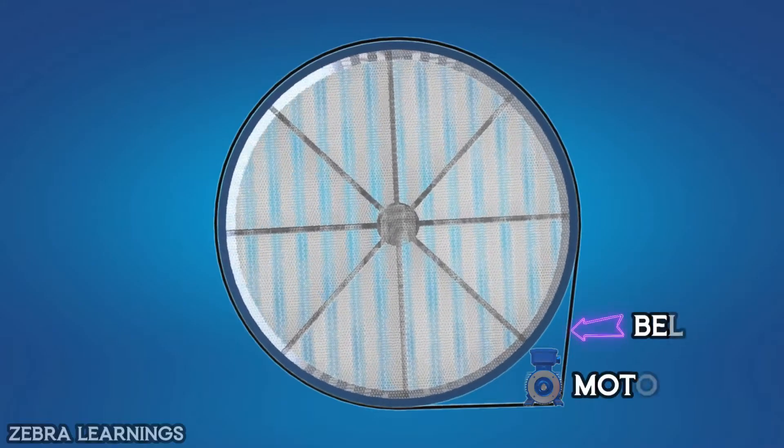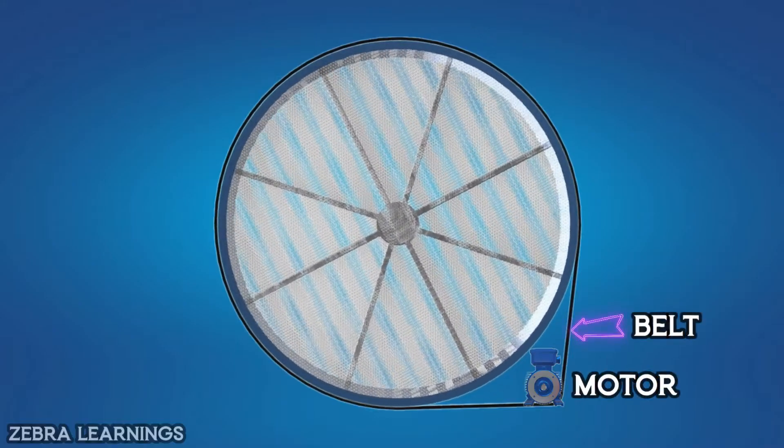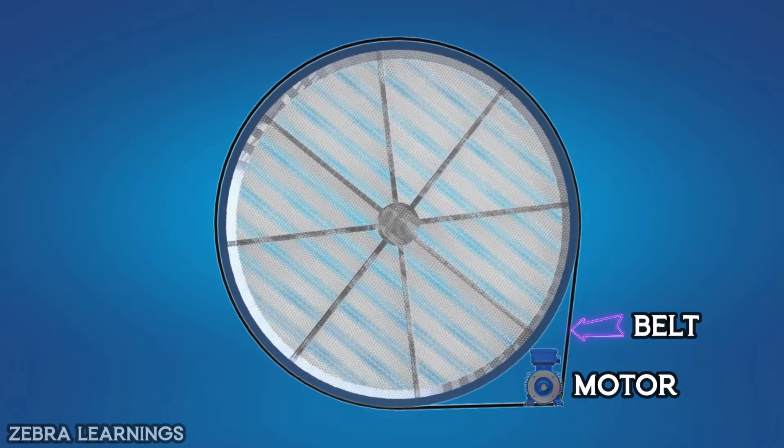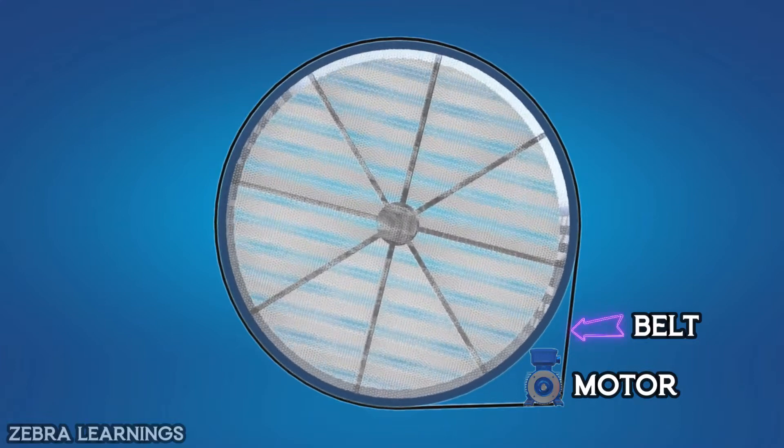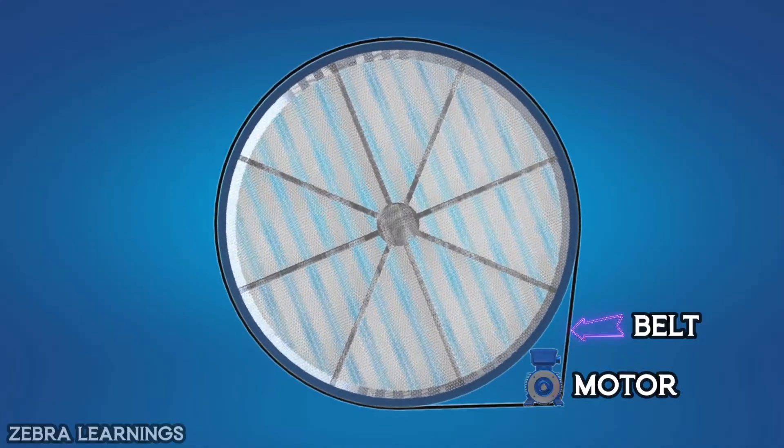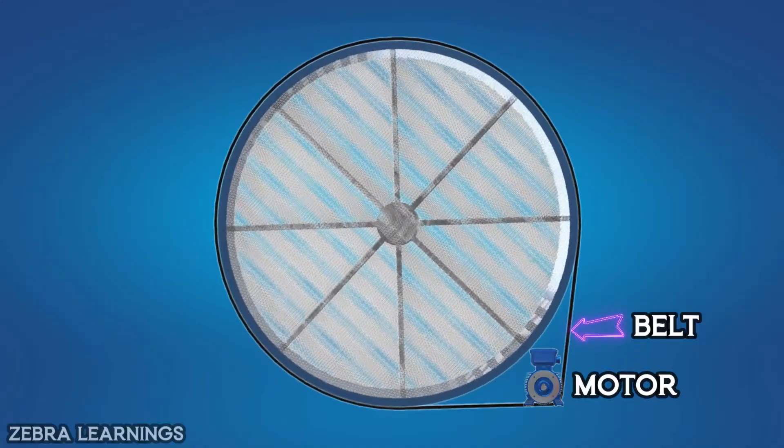This thermal wheel is connected by a small motor with a belt. When the FAHU is running, this motor is also running. Due to this, the wheel will keep rotating.